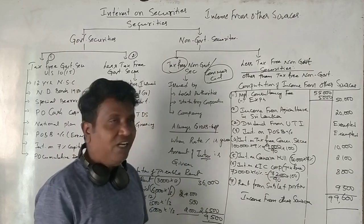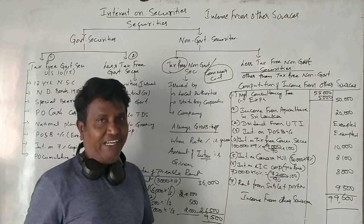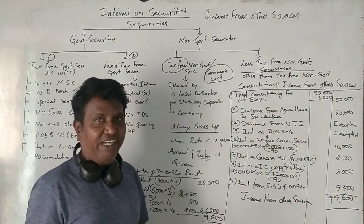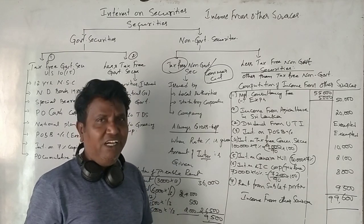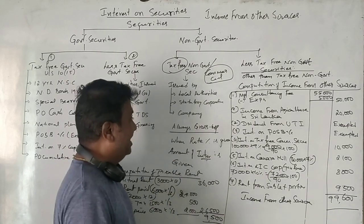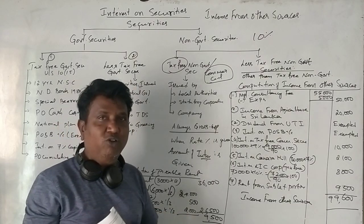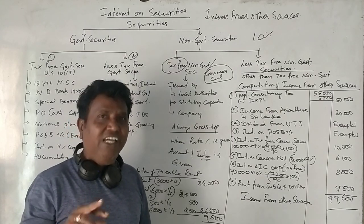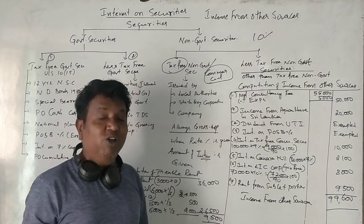For tax-free securities, you don't pay tax on the interest amount directly. The interest received is a net amount. You need to gross up the net amount to get the gross amount. For example, if the investment is ₹10,000 at 10% interest, the net received might be ₹9,000 — you need to gross up from ₹9,000 to get the gross amount.